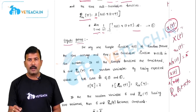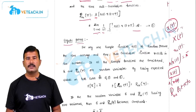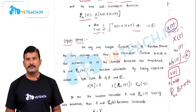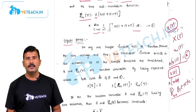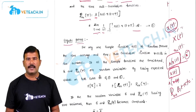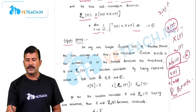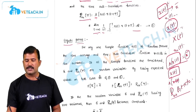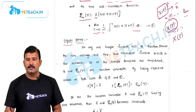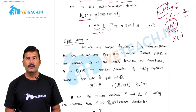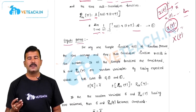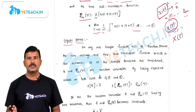If we consider all the sample functions of a random process, every sample function yields a constant when we find the time average or the time autocorrelation function. That means if we consider time averages for all the sample functions, these form a set of constants — that is, a random variable. For a single sample function the time average is constant, but if we consider all the sample functions it becomes a random variable because it is a set of real numbers. The same holds for the time autocorrelation function: considering all sample functions, it also becomes a random variable.